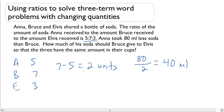That will allow me now to figure out how much soda each of them had. Anna had 200, Bruce had 280, and Elvis had 120. So now we figured out how much they each have.